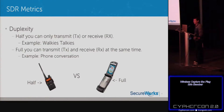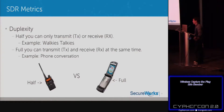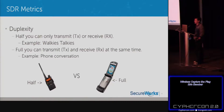Before we dive into replay attacks, let's go over some terminology. First: duplexity. If you have half duplex, you can only transmit or receive at a single time — think of a walkie-talkie. Full duplex means you can transmit and receive simultaneously, like a phone conversation.